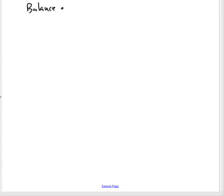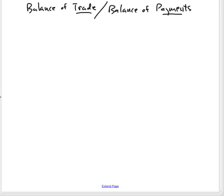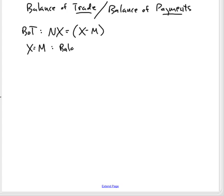We turn now to the ideas of the balance of trade and balance of payments — related but quite different ideas. Balance of trade is also referred to as, or can be considered the same thing as, net exports. If X is equal to M, then trade is balanced. The balance of trade is equal to zero. You have no surplus, no deficit.